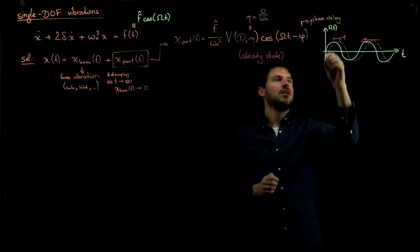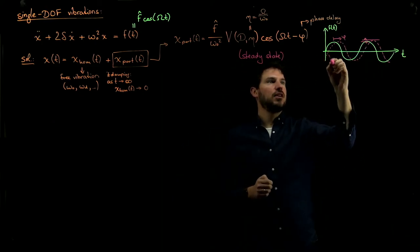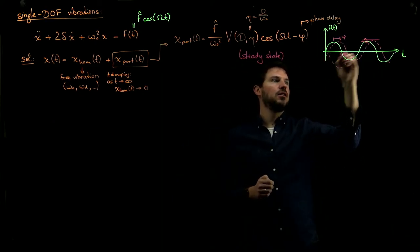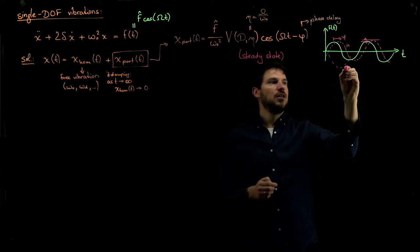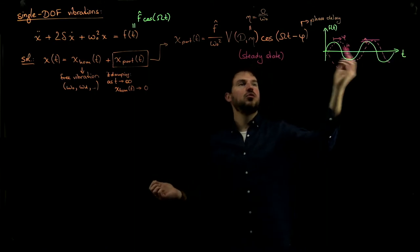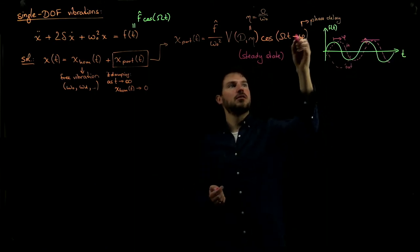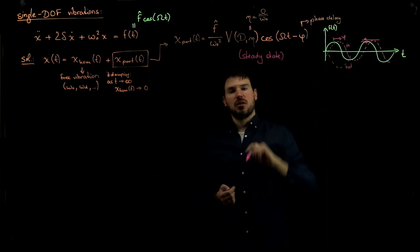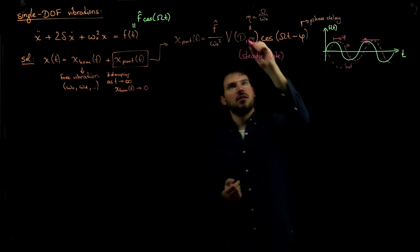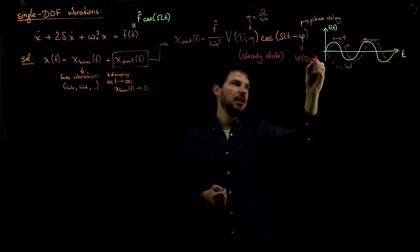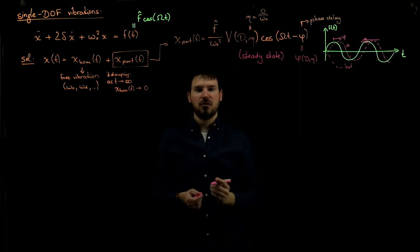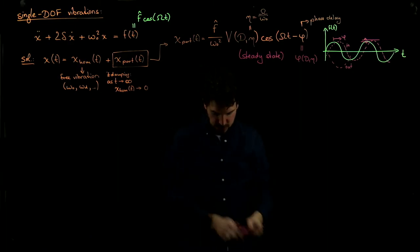Otherwise we are out of phase, which means in that case the response goes in the opposite direction. This is what we call in phase, and this is what we call out of phase. Which of the two we see depends on the phase delay phi, and this in turn depends on D and eta, because phi is also a function of D and eta. You can find all of these in the formula collection.